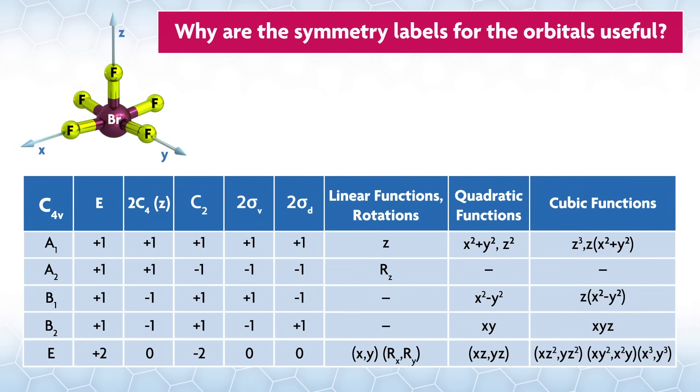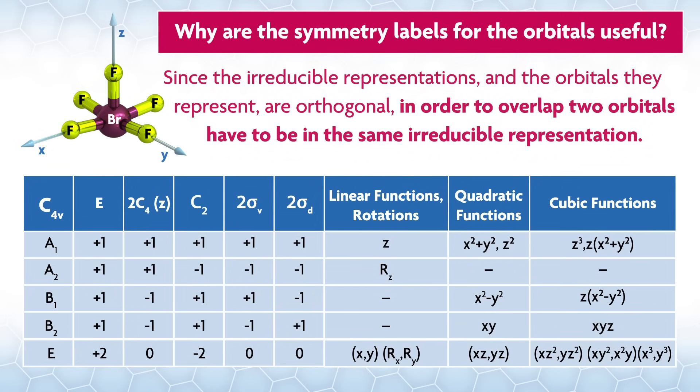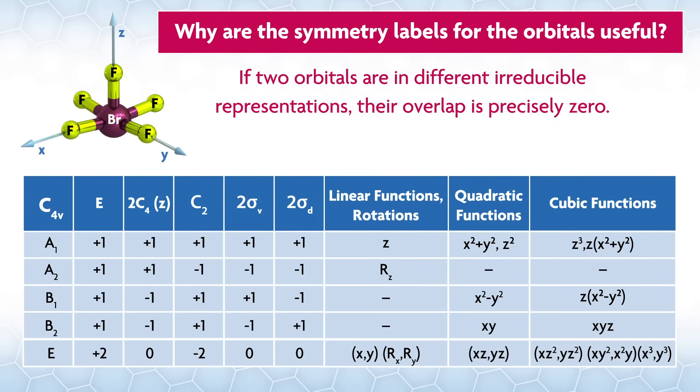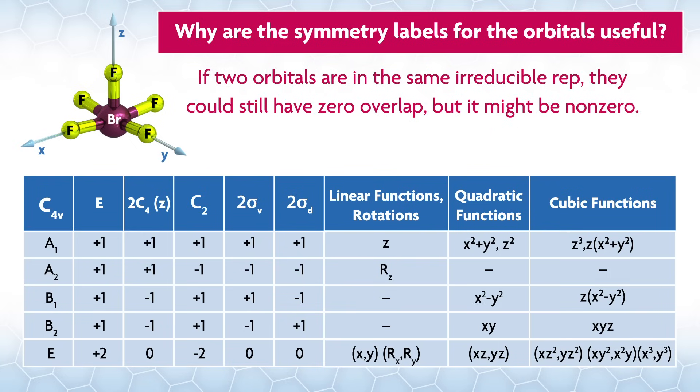Why are the symmetry labels for the orbitals useful? For example, since the irreducible representations and the orbitals they represent are orthogonal, in order to overlap, two orbitals have to be in the same irreducible representation. Two orbitals being the same irreducible rep is necessary but not sufficient to show overlap. In other words, if two orbitals are in different irreducible representations, their overlap is precisely zero. If two orbitals are in the same irreducible representation, they could still have zero overlap, but it might be non-zero.